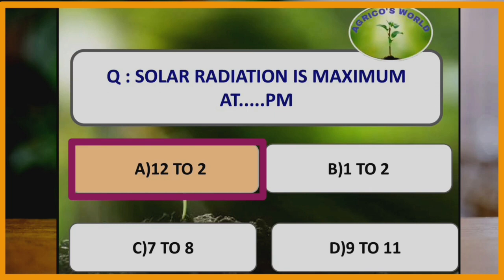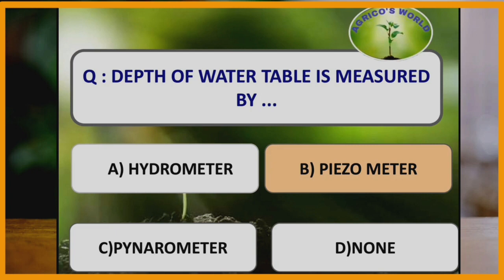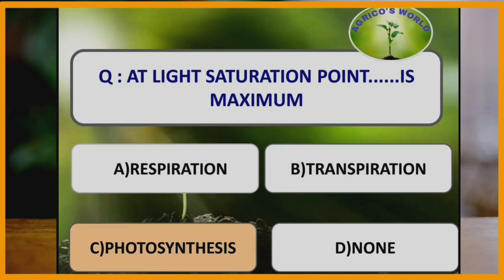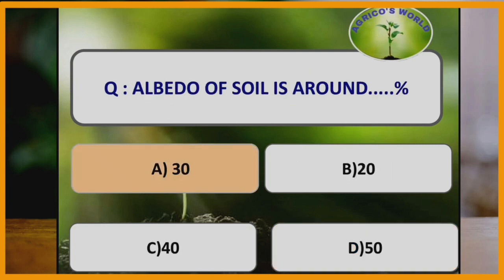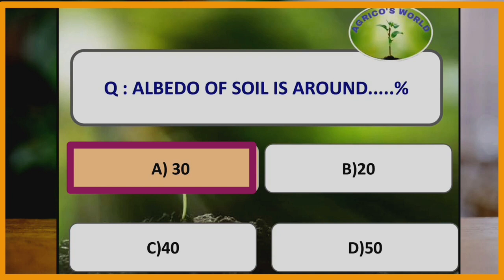Solar radiation is maximum at 12 to 2 PM. Photosynthesis is maximum at the light saturation point. At the light compensation point, photosynthesis and respiration are equal, so the net is zero.